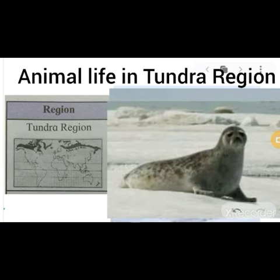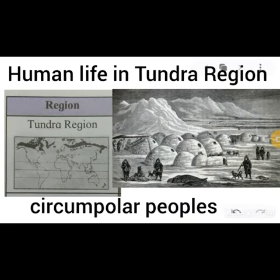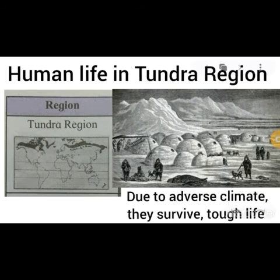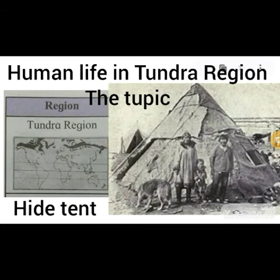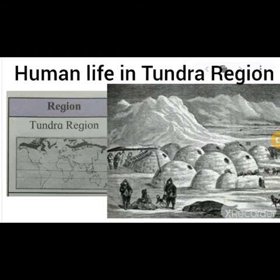Human life in the tundra region: Eskimos are the indigenous circumpolar people who have traditionally inhabited the tundra region. Due to adverse climate conditions, they survive using the tupik — a traditional hide tent used for shelter — and the igloo, also known as a snow house or snow hut, a type of shelter built of snow. Such is the type of human life seen in the tundra region.